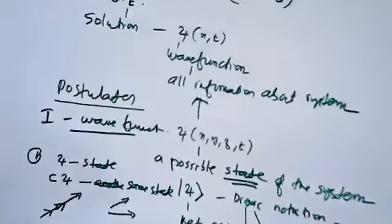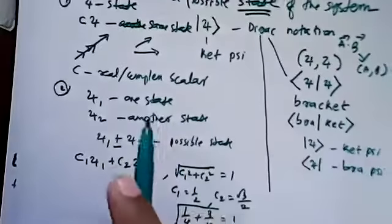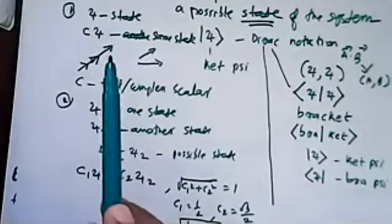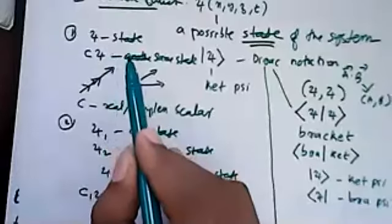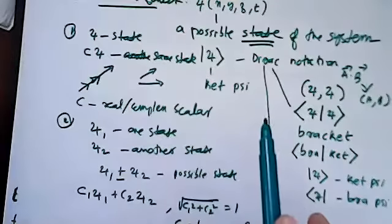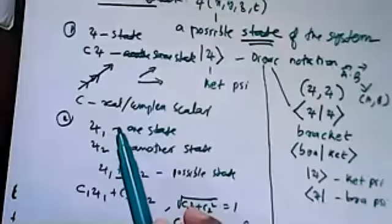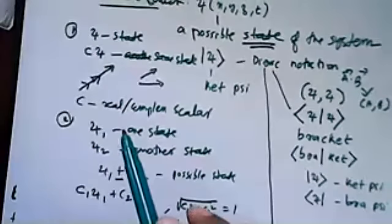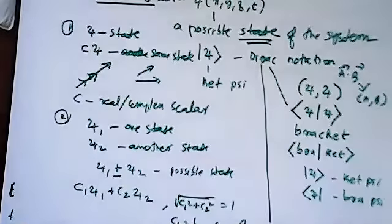The first postulate was about the wave function. The wave function can be considered almost similar to a vector, but we usually call it a state vector. It represents a particular state of the system, so that psi wave function is known as the state vector of the system. The vector operations you have already learned can be applied on the wave function — addition, multiplication by scalar, and so on.